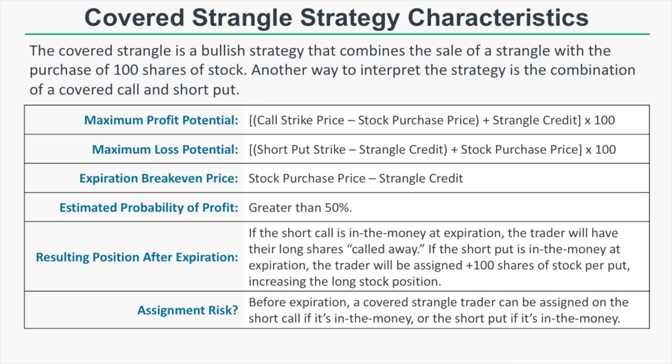The expiration break-even price is the stock purchase price minus the strangle credit. The estimated probability of profit on this trade is greater than 50% because we're collecting a credit which lowers the break-even of our long stock.